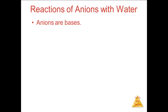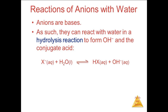Anions are the conjugate bases of some acid. As bases, they can react with water in the hydrolysis reaction. The stronger the base, the more hydroxide ion the reaction produces, and the weaker the base, the less hydroxide ion. The conjugate bases of strong acids are so weak that they do not act as bases in water — this is why alkaline metal salts of strong acids produce neutral solutions. The conjugate bases of weak acids are weak bases, so alkaline metal salts of weak acids will form basic solutions.